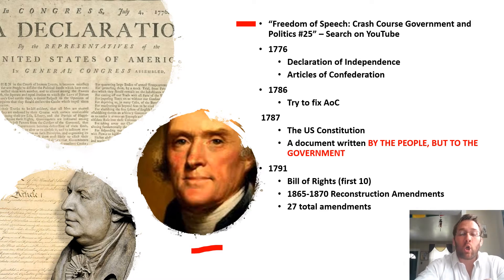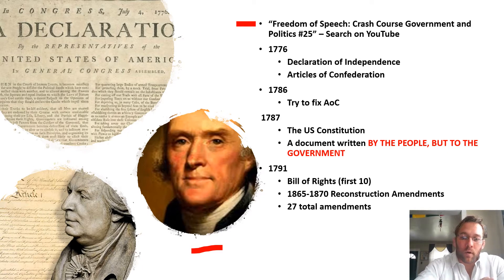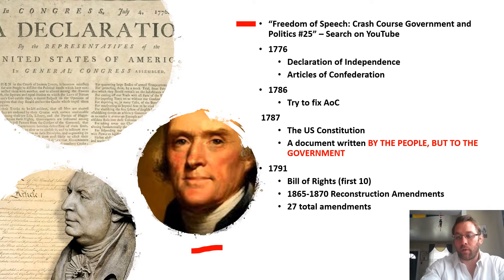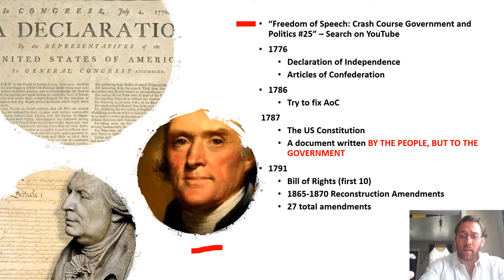The Articles of Confederation loosely held together the 13 colonies in what we now call the United States of America. For a metaphor, imagine the European Union today — separate countries that hold themselves together under this EU flag, but they're all separate. This is what the Articles of Confederation were about: each individual state within the initial United States sort of acted as its own sovereign nation.